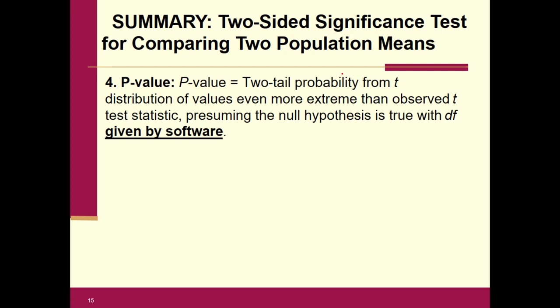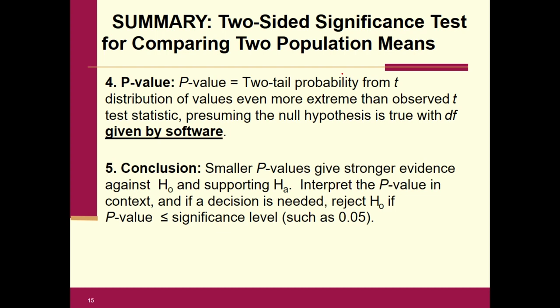The p-value will be a two-tailed probability from the T-distribution, and it will be given to us by the software on the test and the homework. For the conclusion, you always compare the p-value to alpha, which will be stated in the problem. If the p-value is less than or equal to alpha, reject the null. If it's greater, do not reject the null — and either you have strong evidence or you do not. We'll go through some specifics in part two.